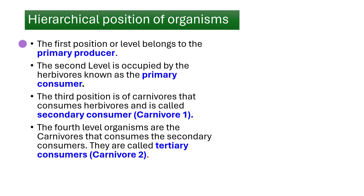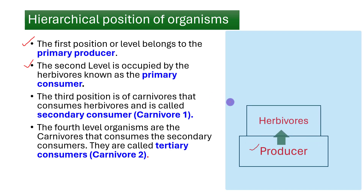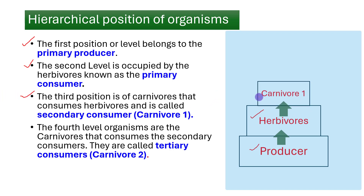Hierarchical positions of organisms: The first position, or level, belongs to the primary producer — autotrophic organisms that produce their own food, placing them at the first level of nourishment. The second level is occupied by herbivores, known as the primary consumer. The third position belongs to carnivores that consume herbivores, called secondary consumers or carnivore level 1. The fourth level organisms are carnivores that consume the secondary consumers, called tertiary consumers or carnivore level 2.